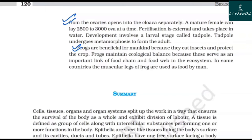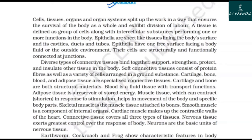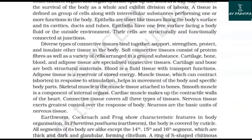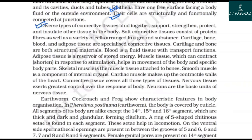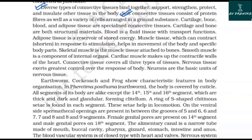Summary. Cells, tissues, organs, and organ systems split up the work in a way that ensures the survival of the body as a whole, exhibiting division of labor. A tissue is defined as a group of cells along with intercellular substances performing one or more functions. Epithelia are sheet-like tissues lining the body's surfaces, cavities, ducts, and tubes, with one free surface facing a body fluid or the outside environment. Their cells are structurally and functionally connected at junctions. Diverse types of connective tissues bind, support, strengthen, protect, and insulate other tissues. Soft connective tissue consists of protein fibers and a variety of cells in a ground substance. Cartilage, bone, blood, and adipose tissue are specialized connective tissues. Blood is a fluid tissue with transport functions; adipose tissue is a reservoir of stored energy.